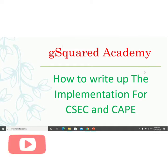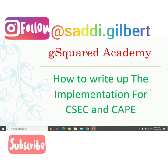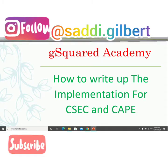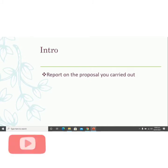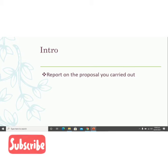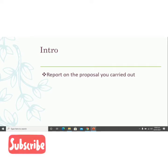Today we're going to look at how to write up an implementation for CXC and for CAPE. Just a little introduction — CXC has come up with this system where you write a proposal in the form of a Planning and Designing lab, then you carry out the proposal, and then you write a report on the execution of that proposal. That report is what we call the implementation, which is what I'm looking at today. A lot of students have difficulty with it because they're not clear on how to write it up.